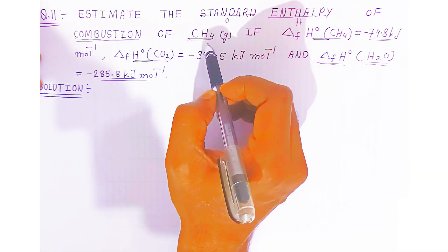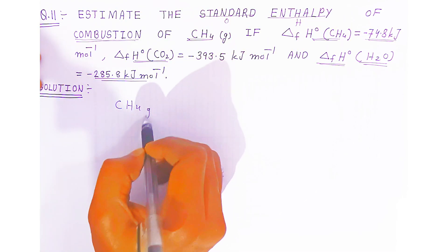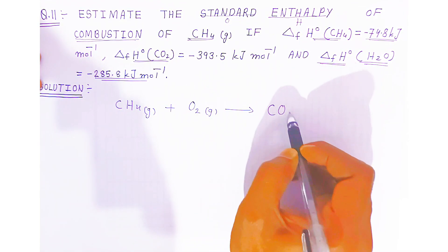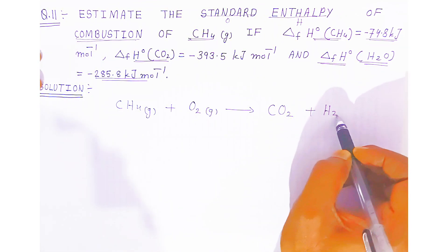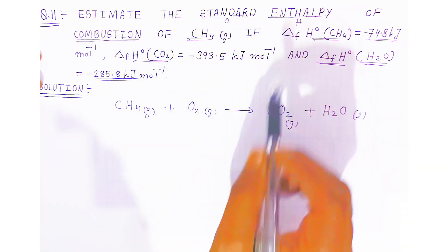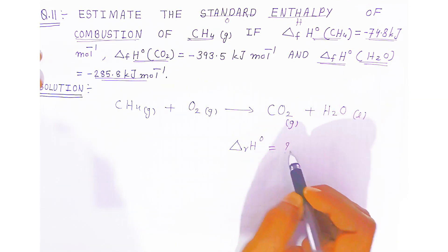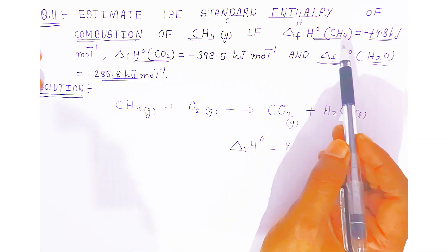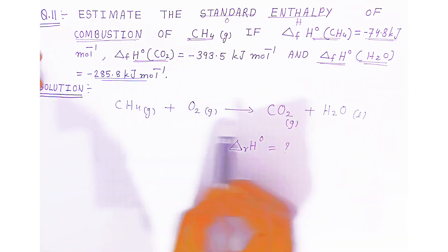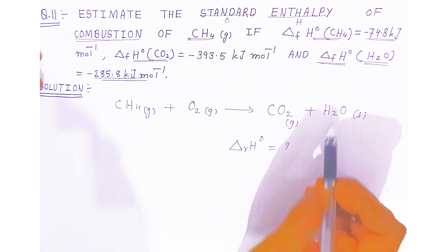When methane burns in the presence of oxygen, the reaction is: CH₄(g) + O₂ → CO₂(g) + H₂O(l). We need to calculate the standard enthalpy of this combustion reaction. But first, this equation is not balanced — one carbon on each side, but the oxygen count doesn't balance, with 3 oxygens needed on the right.